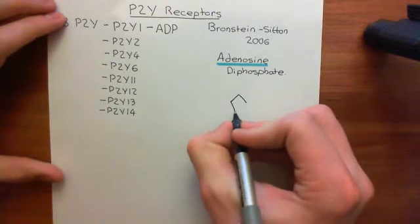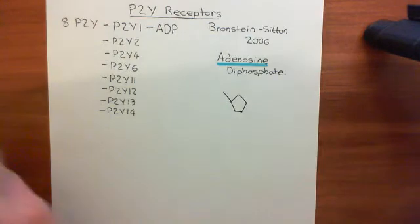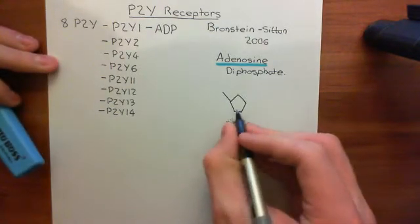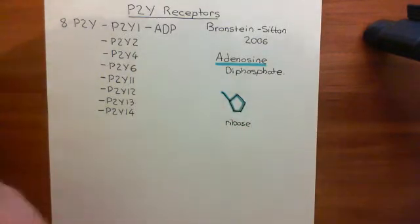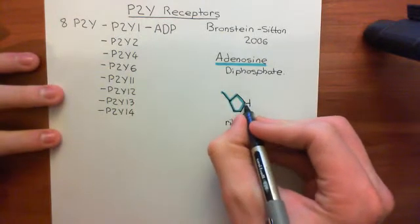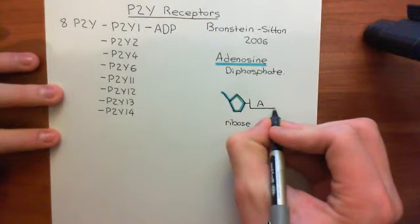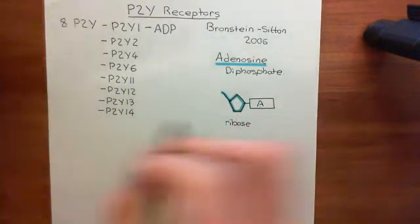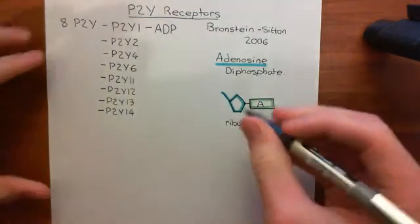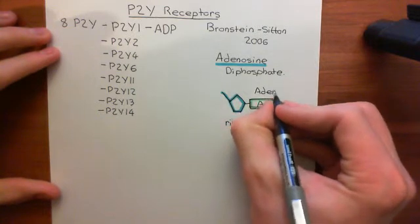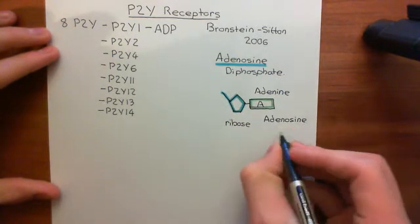We'll have our ribose sugar here, which is a five-membered ring made up of four carbon atoms and one oxygen atom, with a fifth carbon coming off the side. This is going to represent our ribose sugar — a pentameric ring. In blue, this is the ribose. To turn ribose into adenosine, we attach onto the first carbon, via a condensation reaction, the organic base adenine, which I'll represent as a rectangle with the letter A in the middle. So adenosine is the name for the organic base adenine bound to ribose, and more generally, adenosine is what's known as a nucleoside.